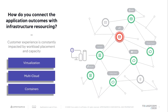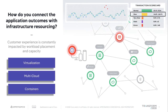So the question arises: how do you connect the application outcomes with infrastructure resourcing? We see that on the back-end there are many different issues that can arise. What we've been able to do here at AppDynamics is provide a transaction scorecard that delineates when your business transactions are normal versus slow versus very slow, so that you can take action before these transactions become errors and affect the end-user experience.